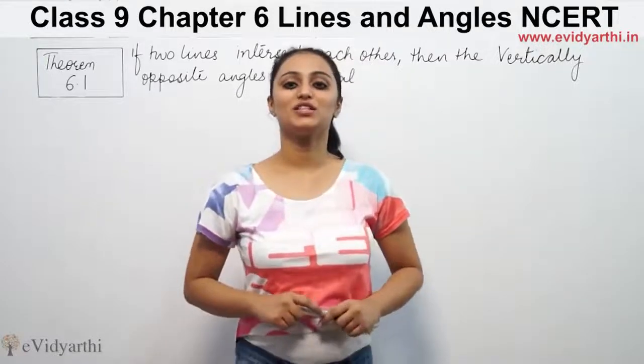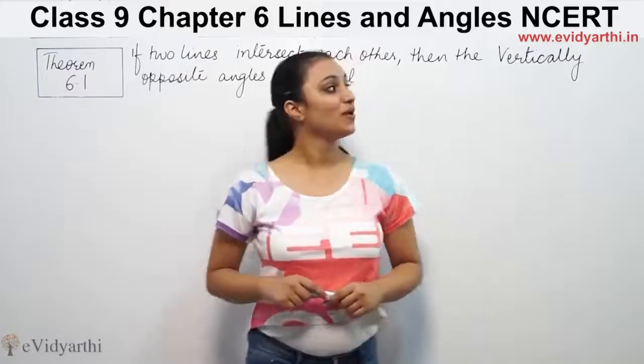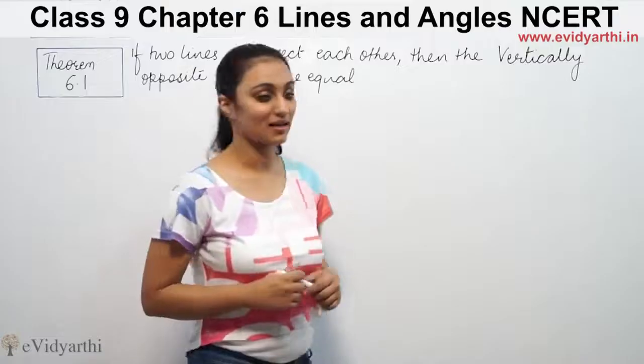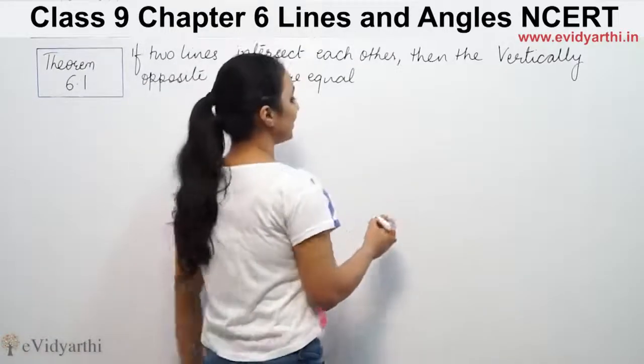Hi, this is Khushbu with another question of lines and angles. This is question number 6.1, page number 94 of NCERT. It says, if two lines intersect each other, then the vertically opposite angles are equal.